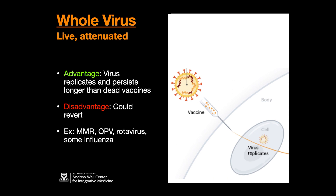The advantage of a whole live attenuated virus vaccine is that the virus replicates and persists a lot longer than a dead vaccine would. So you're getting more bang for the buck — the virus will divide through many division cycles and persist a bit longer. The disadvantage is you could get reversion to a more pathogenic form, and we've seen this with the oral polio vaccine, where it goes from a harmless to a more harmful form, and a few kids have actually gotten polio from it.